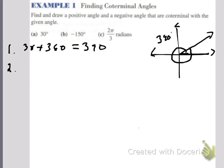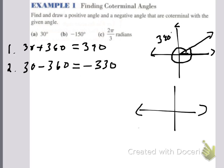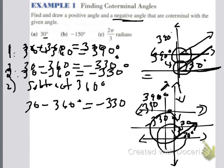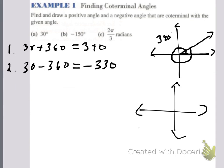For the second part, we want the negative coterminal angle. We do 30 minus 360, which gives me negative 330 degrees. In order to draw that, I start at the initial side and go around in a clockwise direction. That ends up looking like a 30-degree angle from the other side, right there. And so we say this is negative 330 degrees.